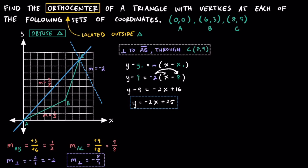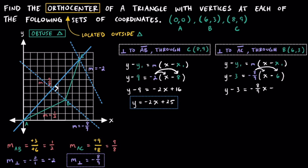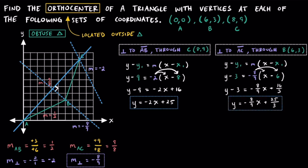If segment AC was the base of this triangle, then the perpendicular line going through point B represents its altitude. This line is perpendicular to segment AC and goes through point B. Using point-slope form with point B at (6, 3) and slope negative 8/9, we write: y minus 3 equals negative 8/9 times (x minus 6). Distributing and adding 3 to both sides gives us y equals negative 8/9 x plus 25/3.